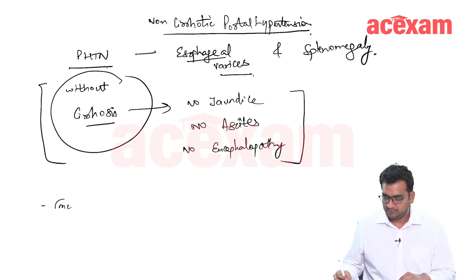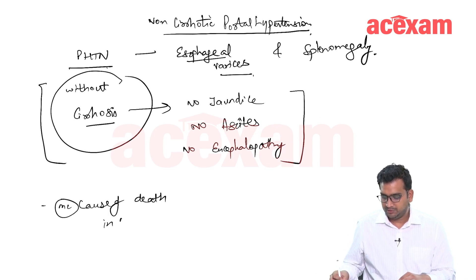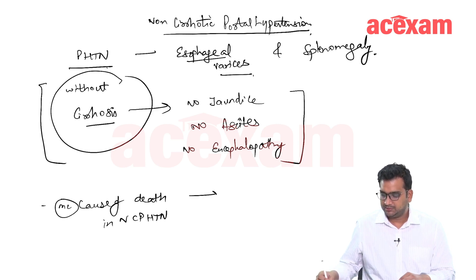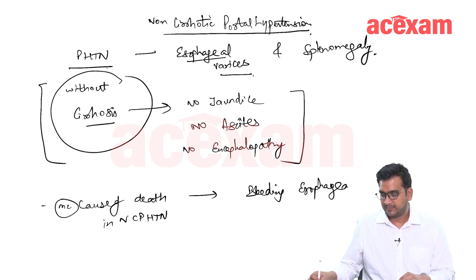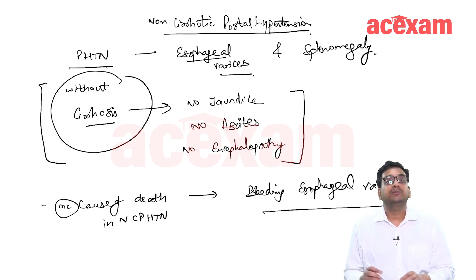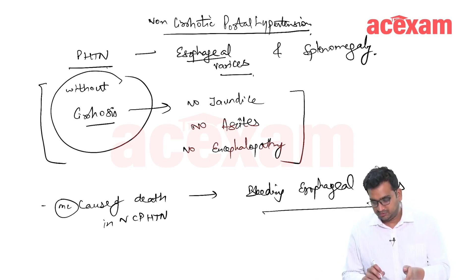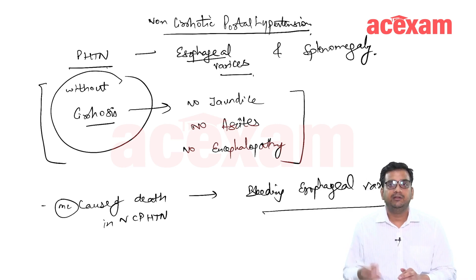That is why the most common cause of death in non-cirrhotic portal hypertension is bleeding esophageal varices. Whereas in cirrhosis, the most common cause of death is liver failure, followed by bleeding esophageal varices.